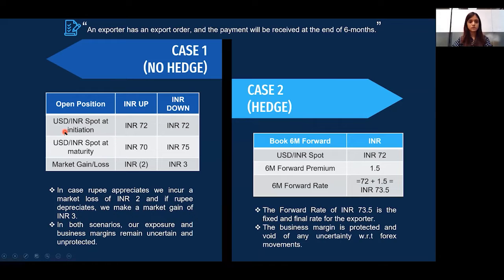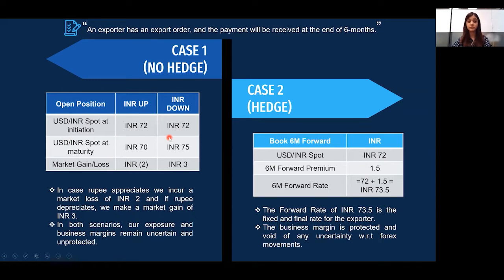Since costing is done at the current spot of 72, we use this rate as the comparing point. Looking at the table: if the rupee appreciates to say 70, we incur a market loss of 2 rupees. If the rupee depreciates to say 75, we make a market gain of 3 rupees. In both scenarios, our business margins are uncertain and unprotected.